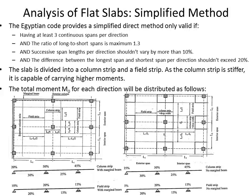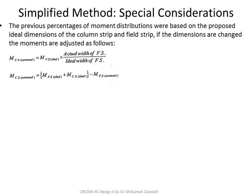Without a marginal beam, the same concept applies. However, the edge values change slightly because without a marginal beam, the stiffness at the supports changes. There is also an ideal dimension for the field strip. If the actual dimension differs from the ideal, you need to adjust by multiplying the moment by the ratio of actual width to ideal width to get the corrected moment.